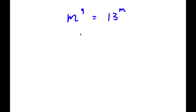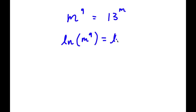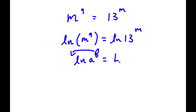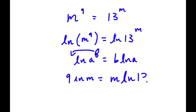In this problem I have m to the power of nine is equal to 13 to the power of m. The first thing I'm going to do is take the natural log on both sides, giving ln of m to the power of nine equals ln of 13 to the power of m. Using the log power rule, I can move the exponents to the front, so I get nine times ln m is equal to m times ln 13.